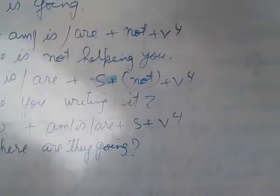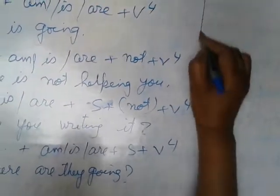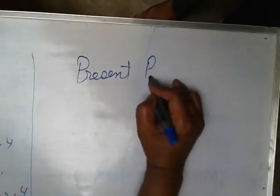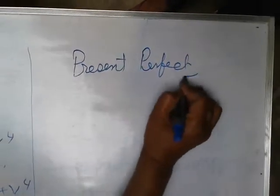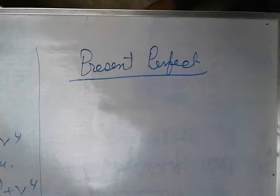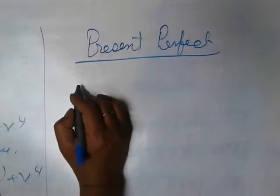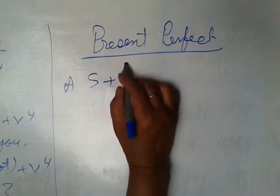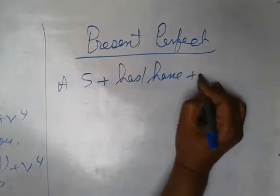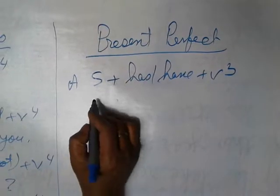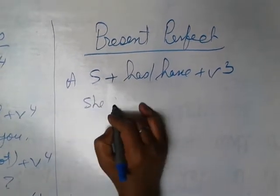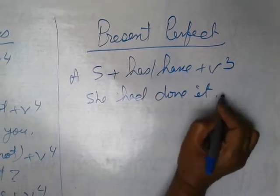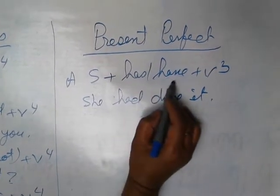Next part is present perfect. As you know, in present perfect has/have and V3 is given. After has/have, V3 is used. One: subject plus has/have plus V3. She has done it. With singular, has is used. Plural, have is used.